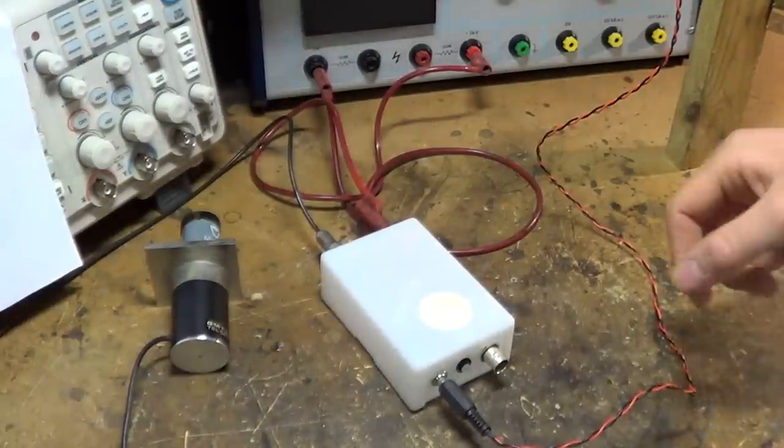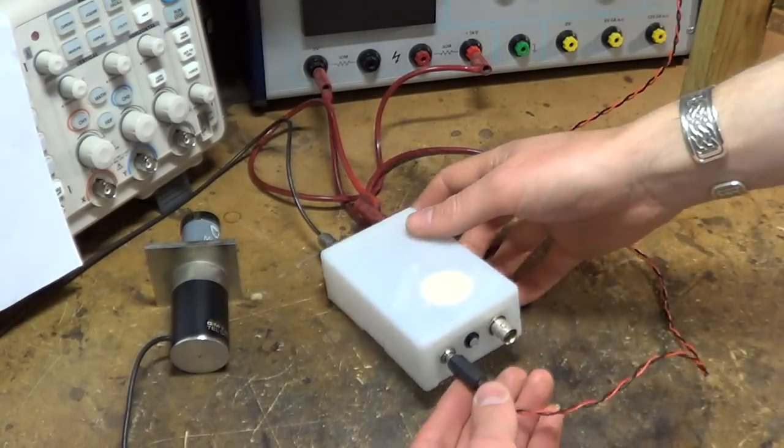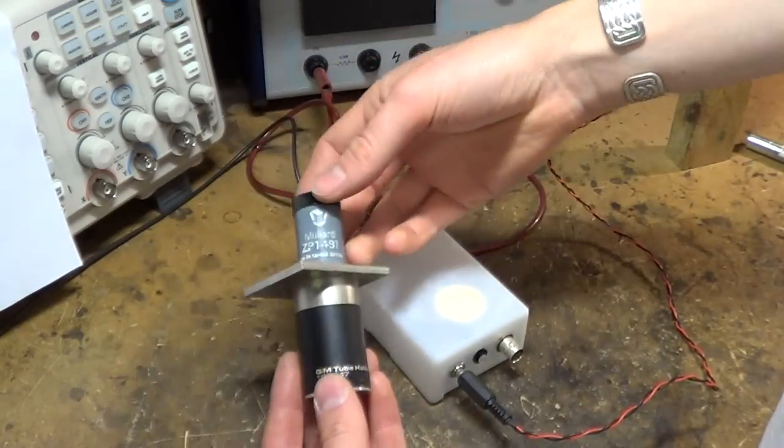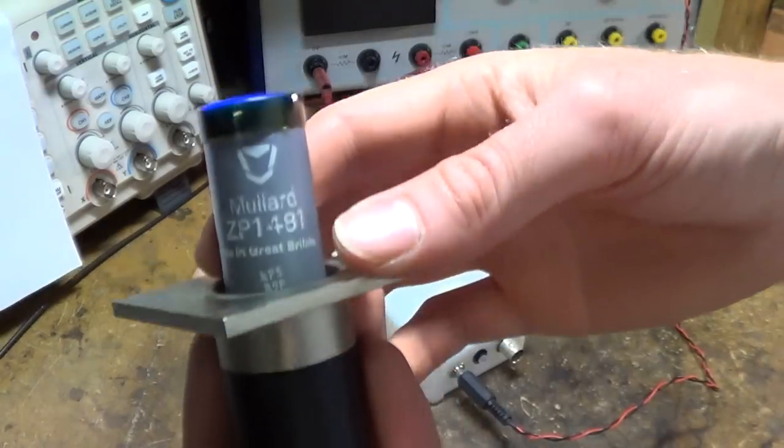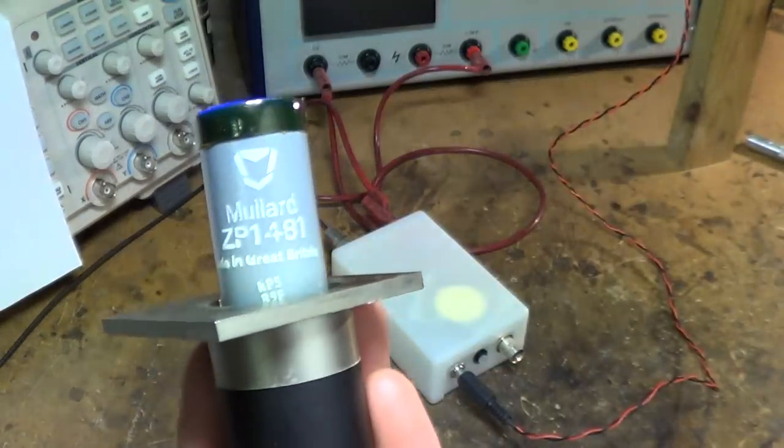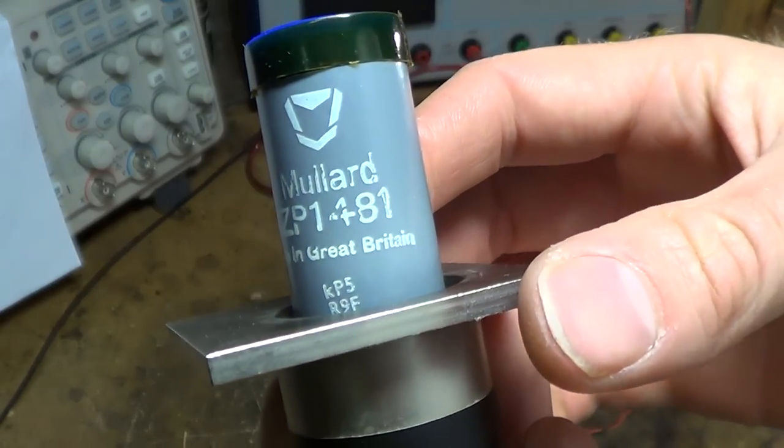Hi folks, this is a little power supply circuit that I made up to drive a Geiger-Muller tube. The tube itself is one I found in Skip a long time ago. It's a Mullard ZP1481.